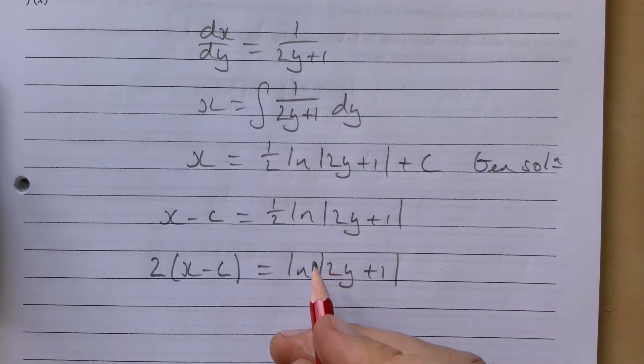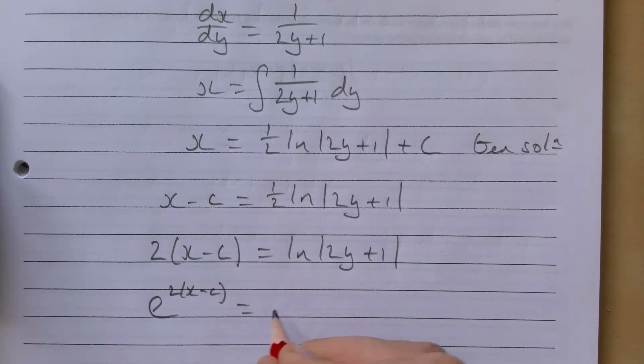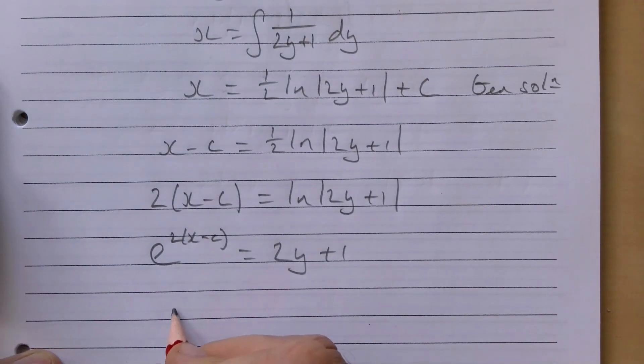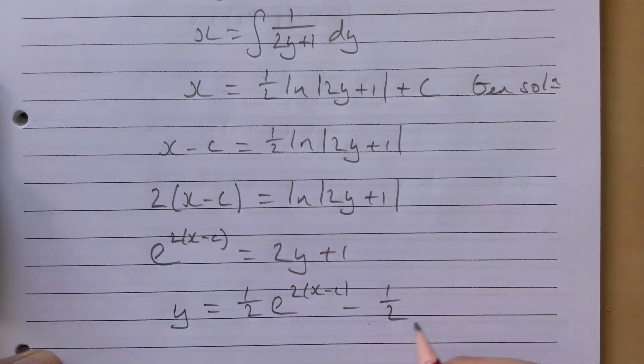Rearranging to get that on its own, we're going to have y = ½e^(2(x-c)) - ½.